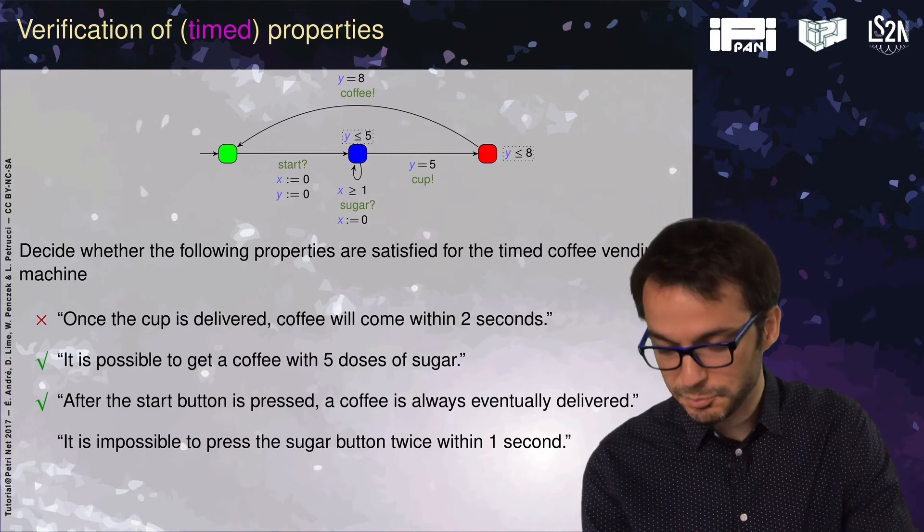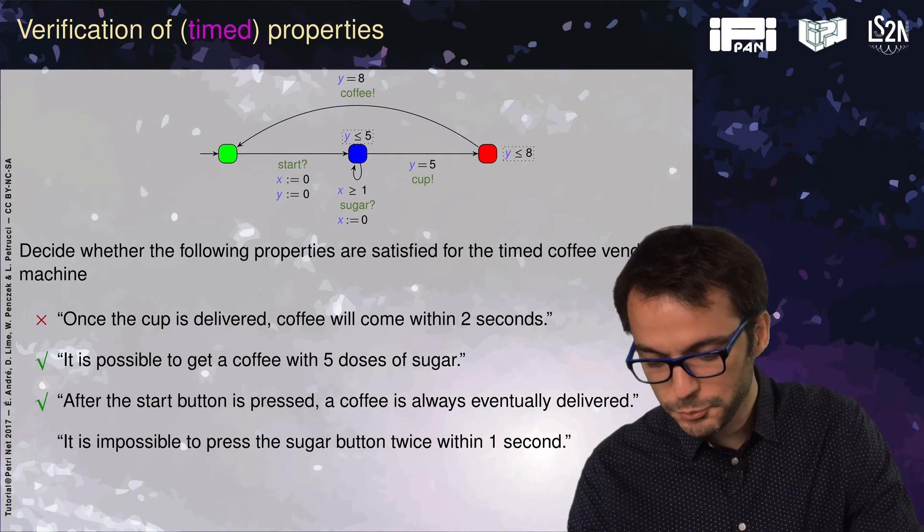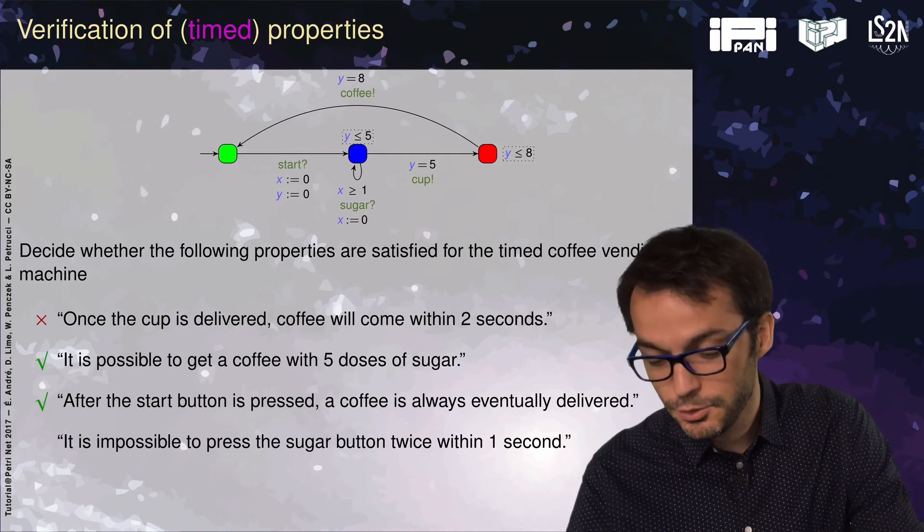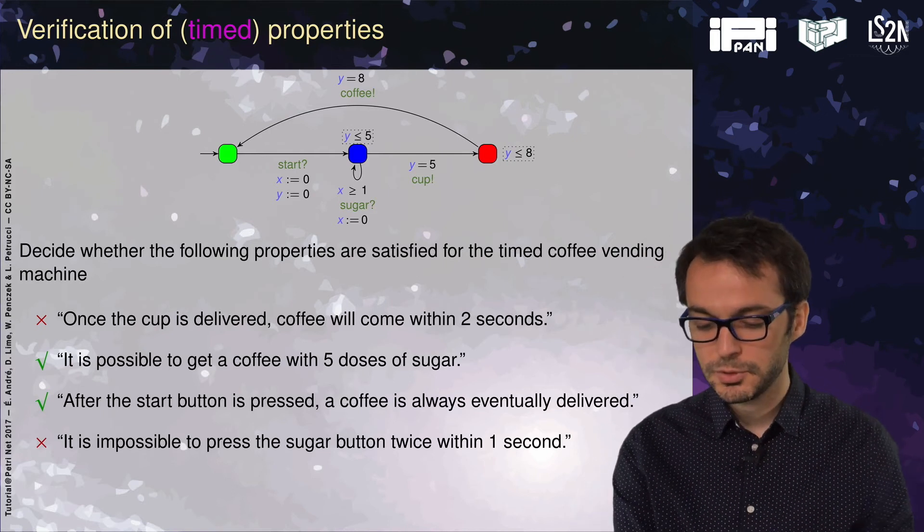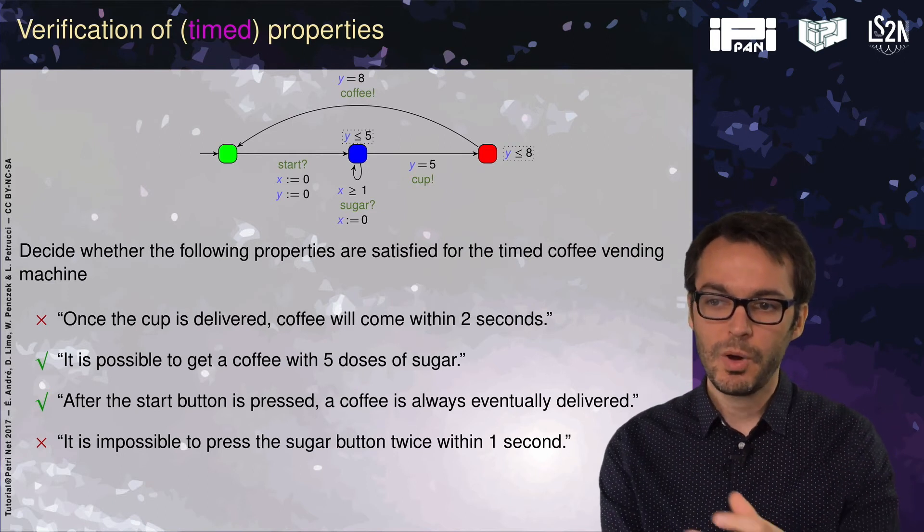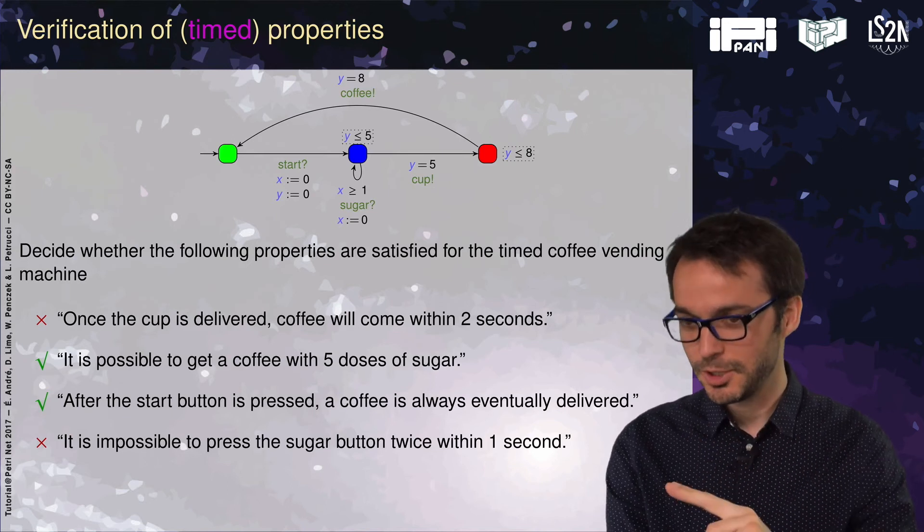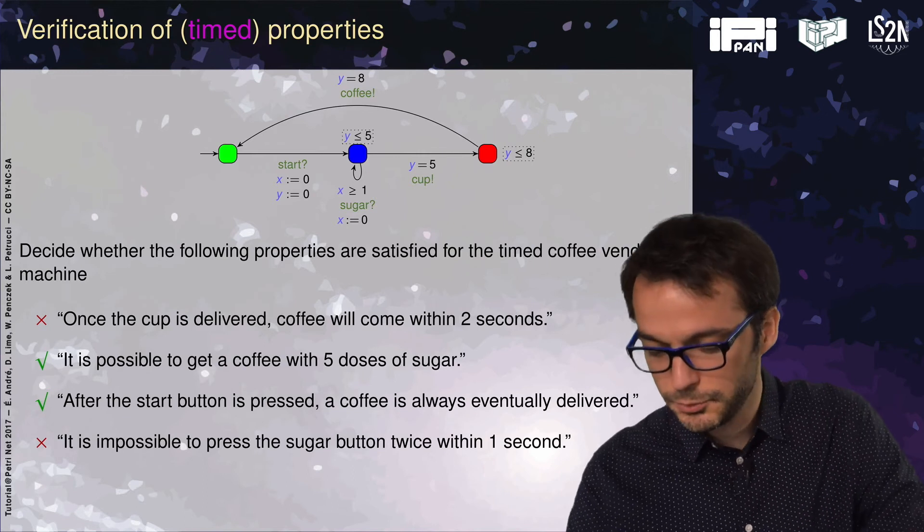After the button is pressed, a coffee is always eventually delivered. Yes. And is it impossible to press the sugar button twice within one second? This is not satisfied because you could press the sugar button when y equals one and then when y equals two. Within this one interval you have two sugar pressures.